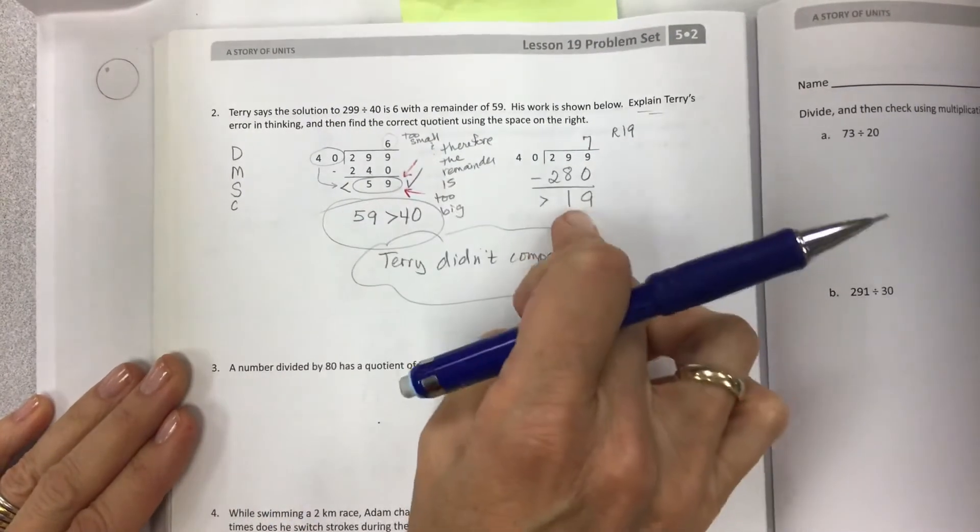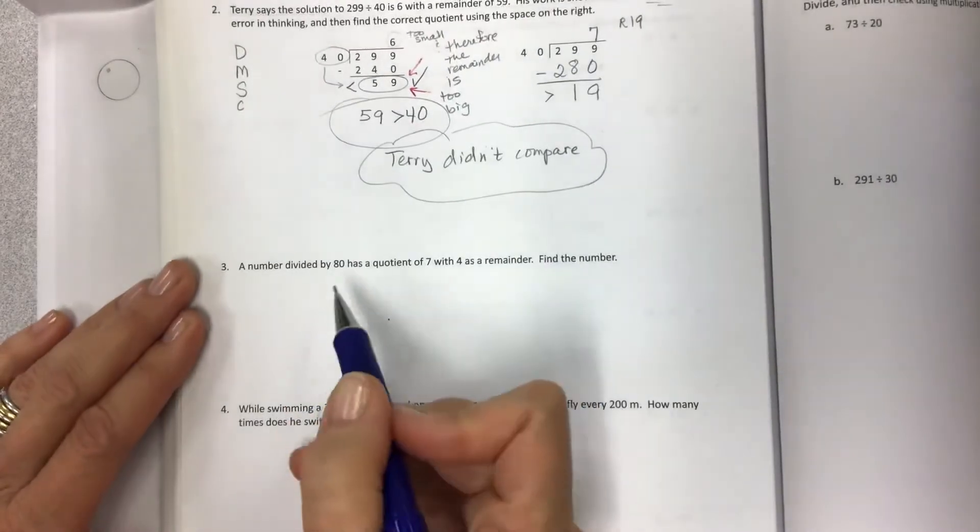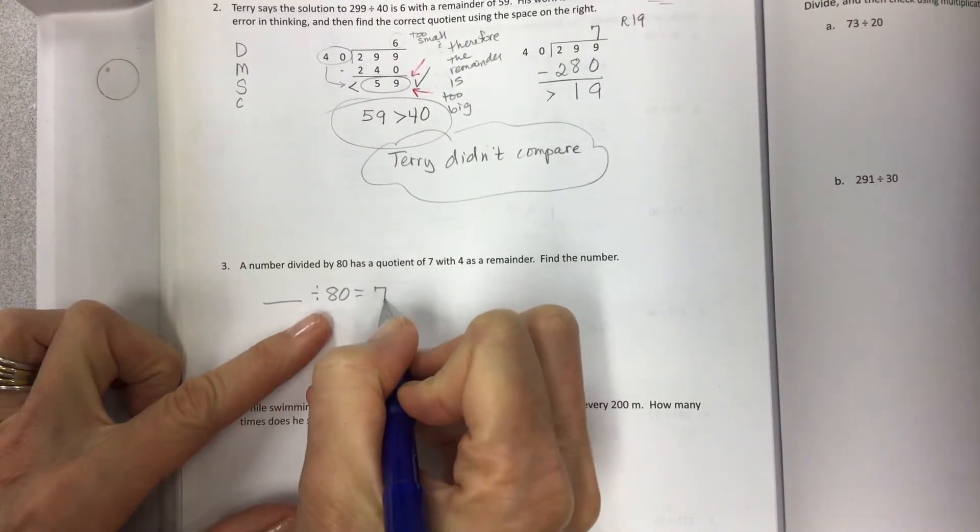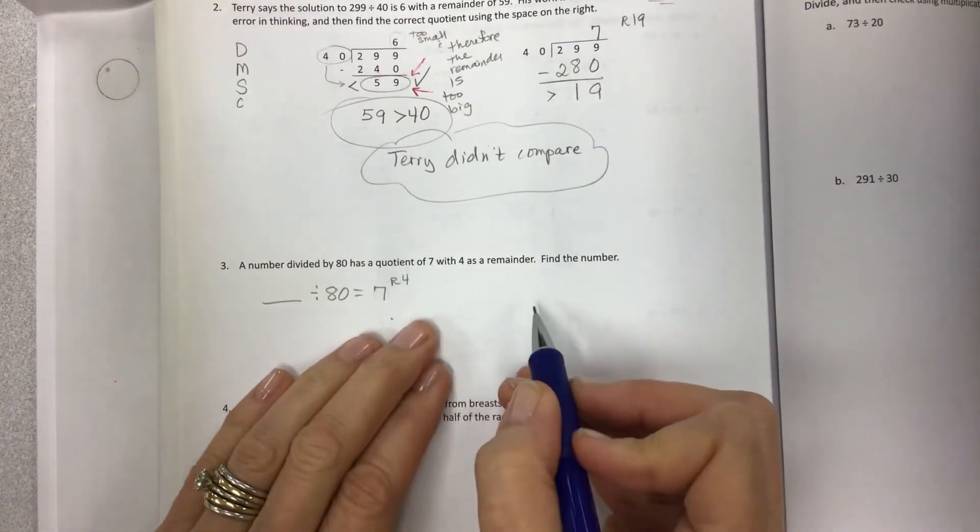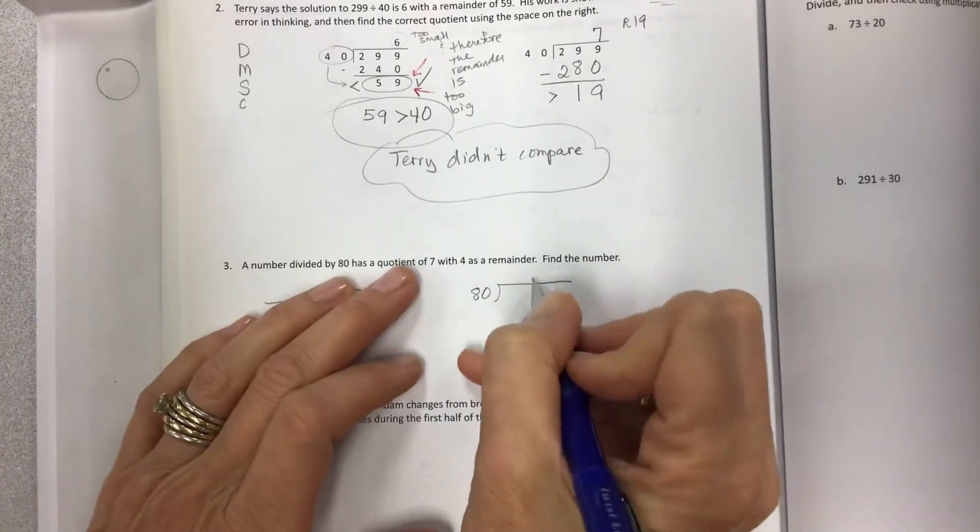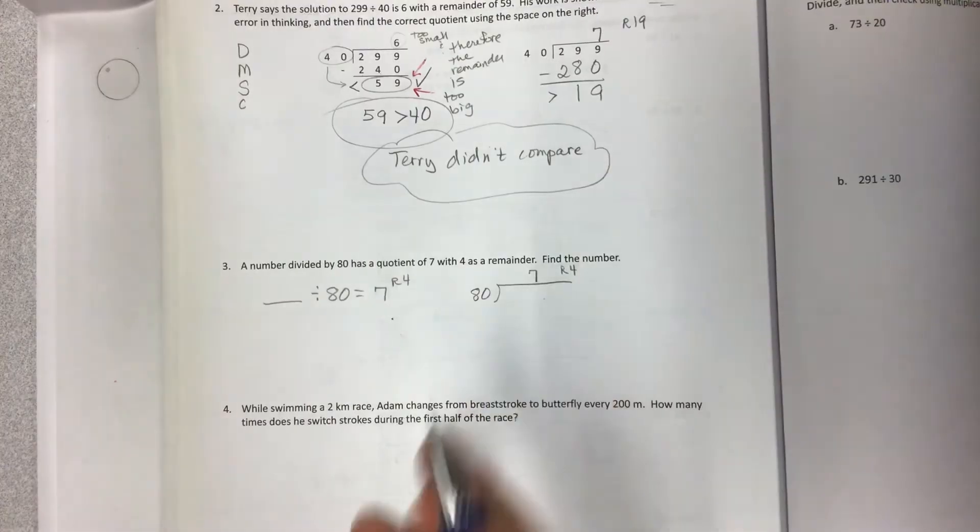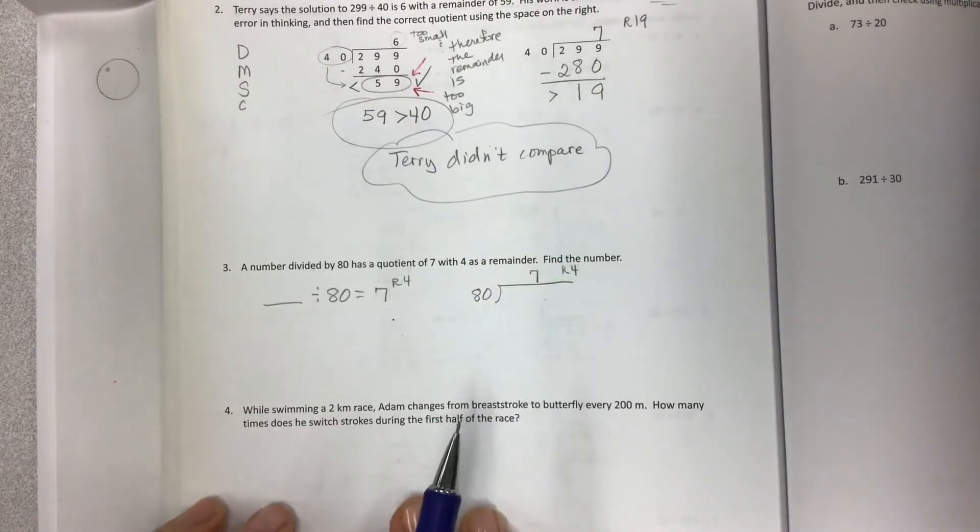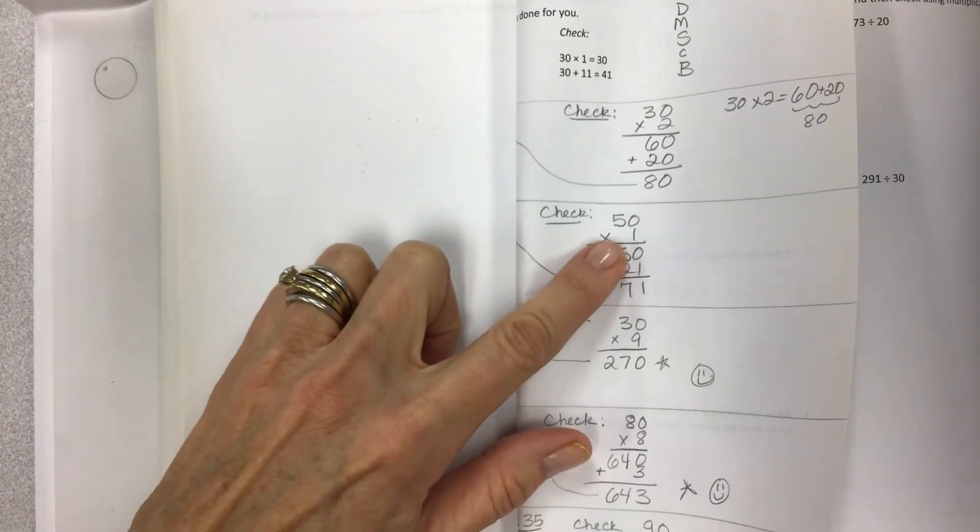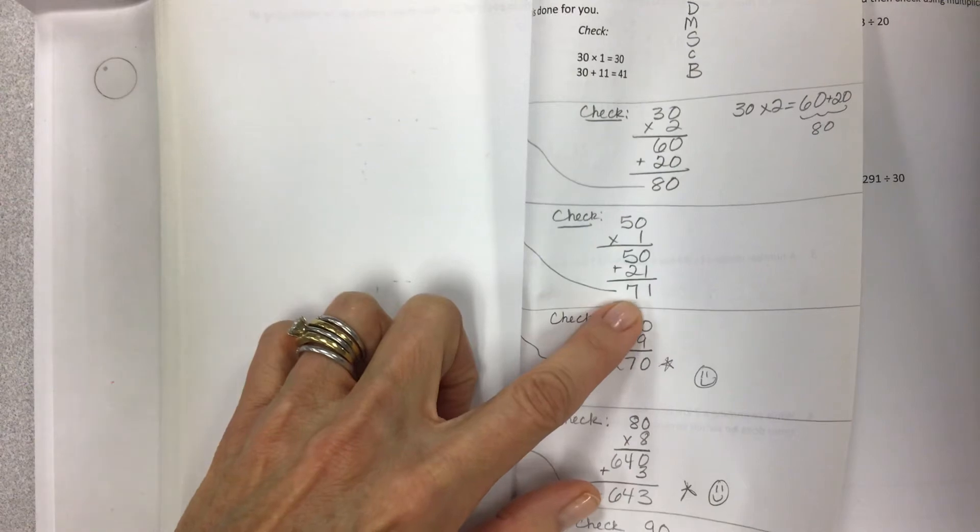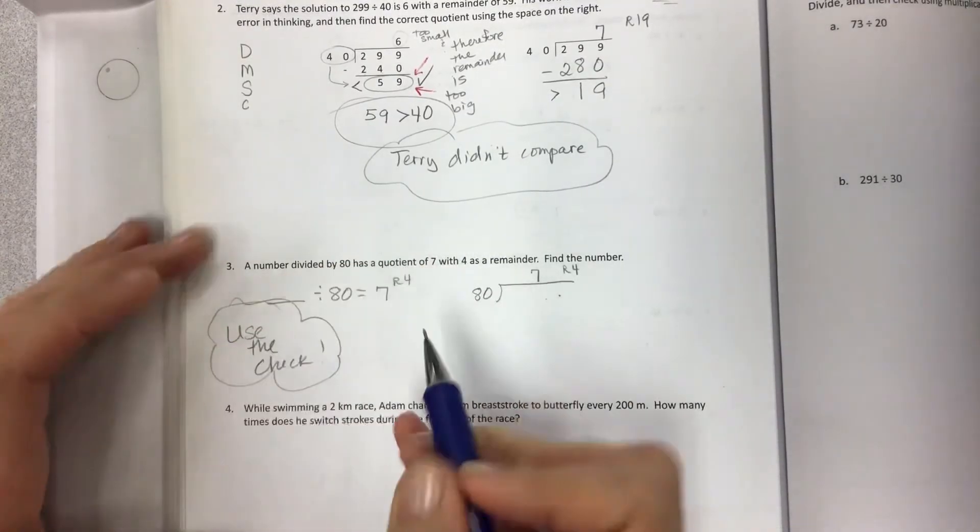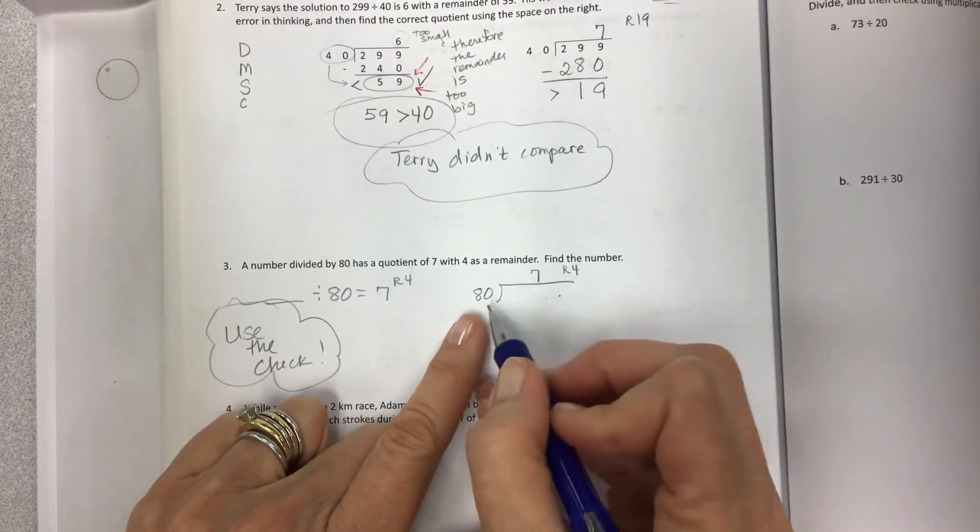And that's the problem. So now you've identified that. This is going to come up again. So don't forget about that. A number divided by 80. A mystery number divided by 80 has a quotient of 7 with a 4 as a remainder. Let's put this in bracket form and see if it makes any more sense. A number divided by 80, mystery number in here has a quotient of 7 with a remainder of 4. Find the number. So what did we do on the opposite side of this? We did a check. Now when you get your check, and if you have the quotient, and if you have the divisor, and you have the remainder, you can get the dividend. Let's use the check. That's your strategy. Circle it. Make a bubble.